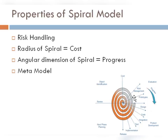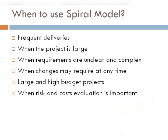जैसे जैसे हम आगे बढ़ते हैं हम step by step — spiral में iterative functions लगा रहे हैं — so it is also kind of an iterative model. तो spiral model बहुत सारे अलग-अलग models की properties से मिलकर बना होता है, इसलिए हम उसको meta model के नाम से भी refer करते हैं।